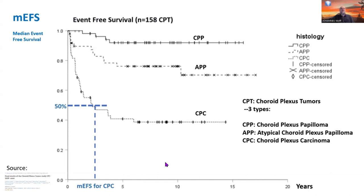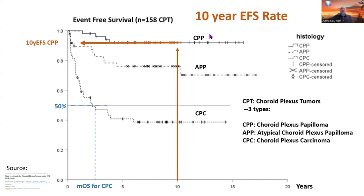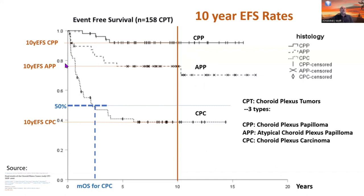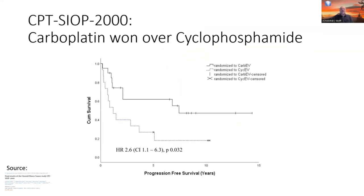But what about the other two curves? They don't cross the 50% line — you cannot describe them with median event-free survival; instead you say 'median event-free survival was not reached.' There are other ways to describe the curve. One is the 10-year event-free survival rate: you start on the x-axis, go to 10 years, go up until you hit the curve, go back to the left, and read on the y-axis. You can do the same for the other curves, getting three numbers to compare the three diagnoses — even without a figure. The trial was called CPT-SIOP-2000, which also had a chemotherapy question comparing carboplatinum versus cyclophosphamide.